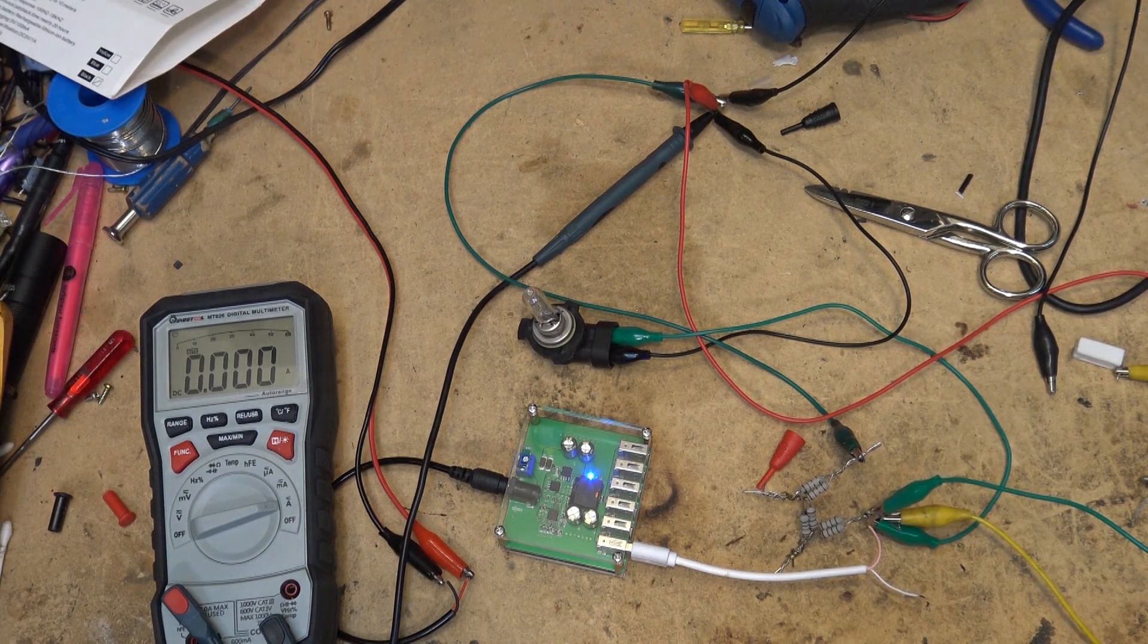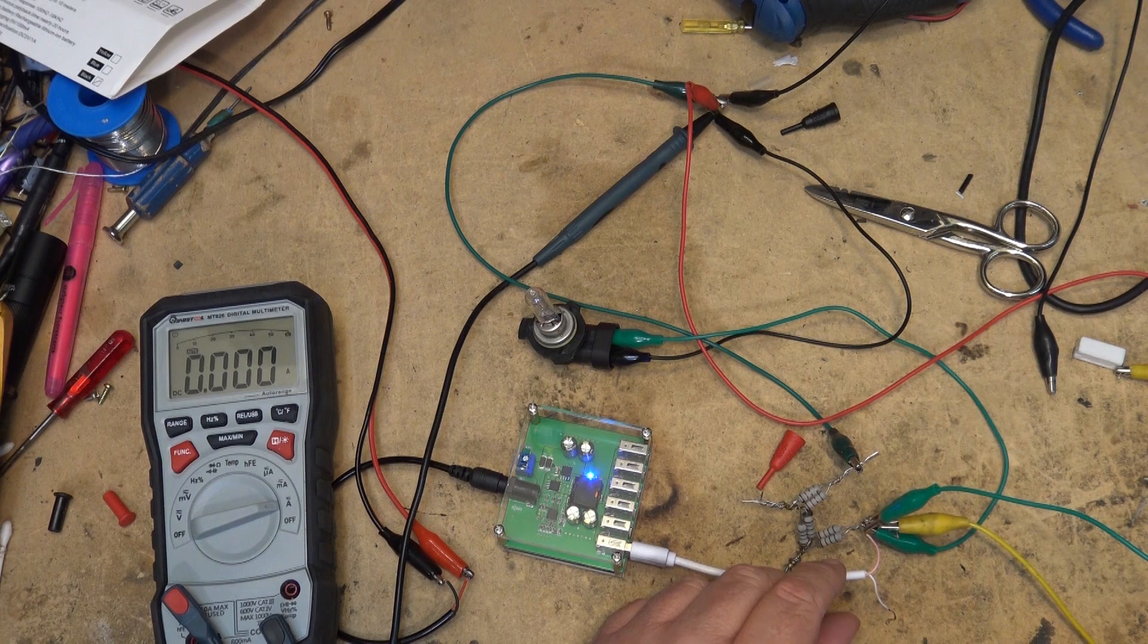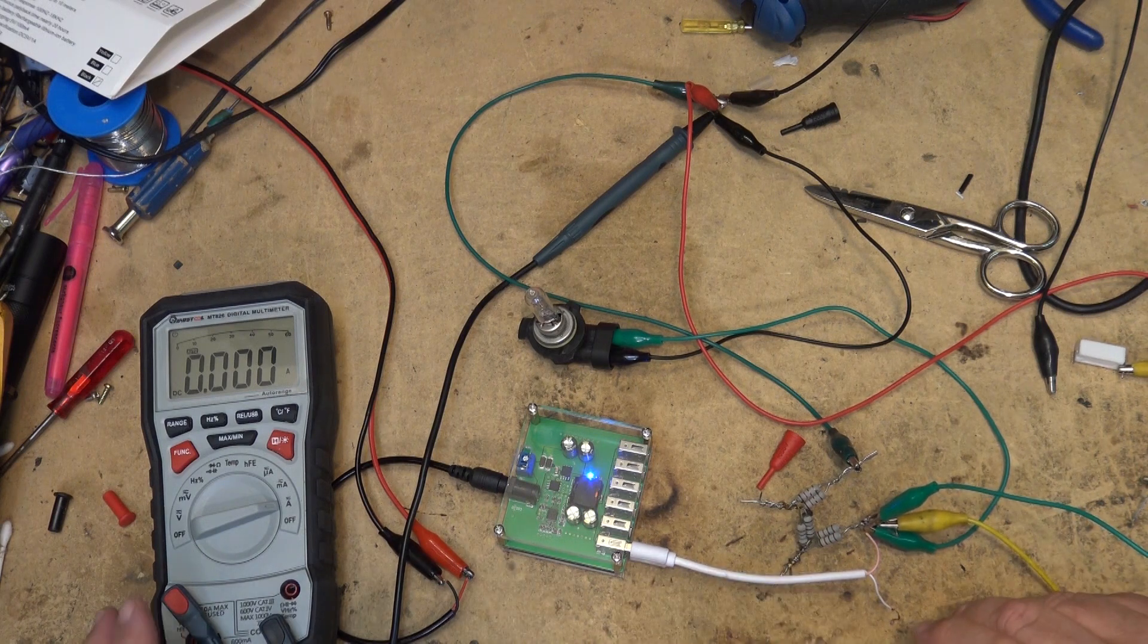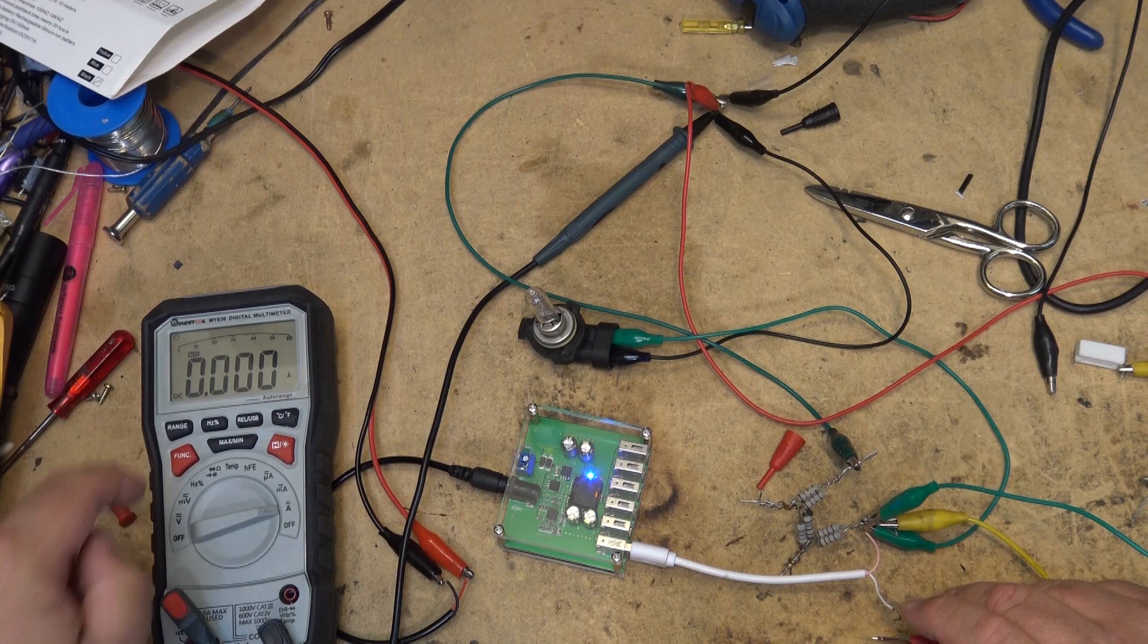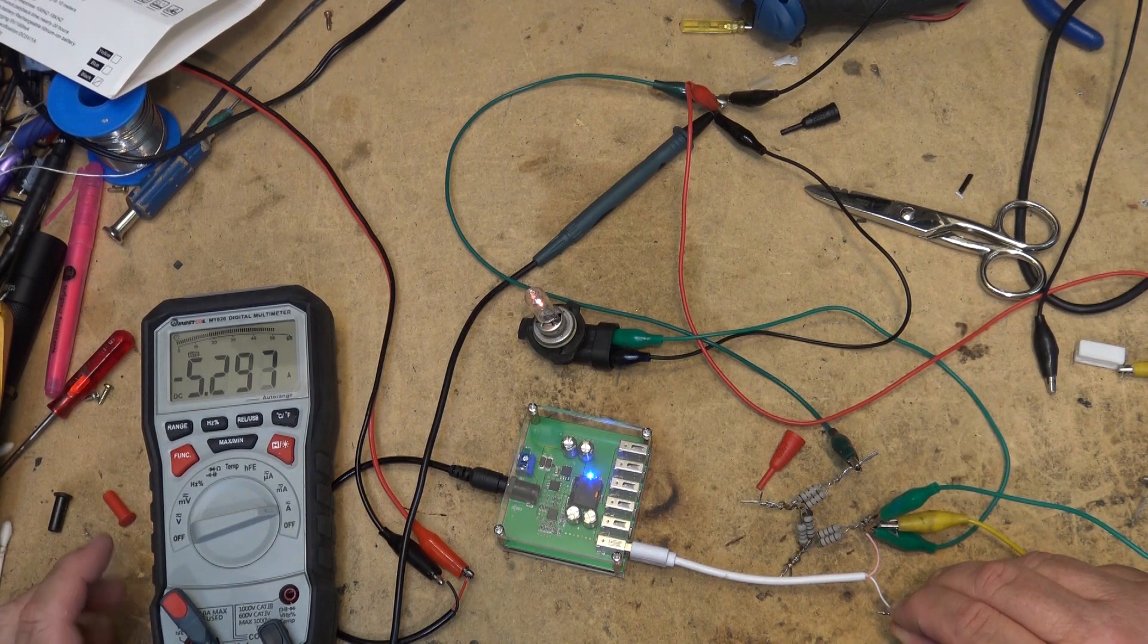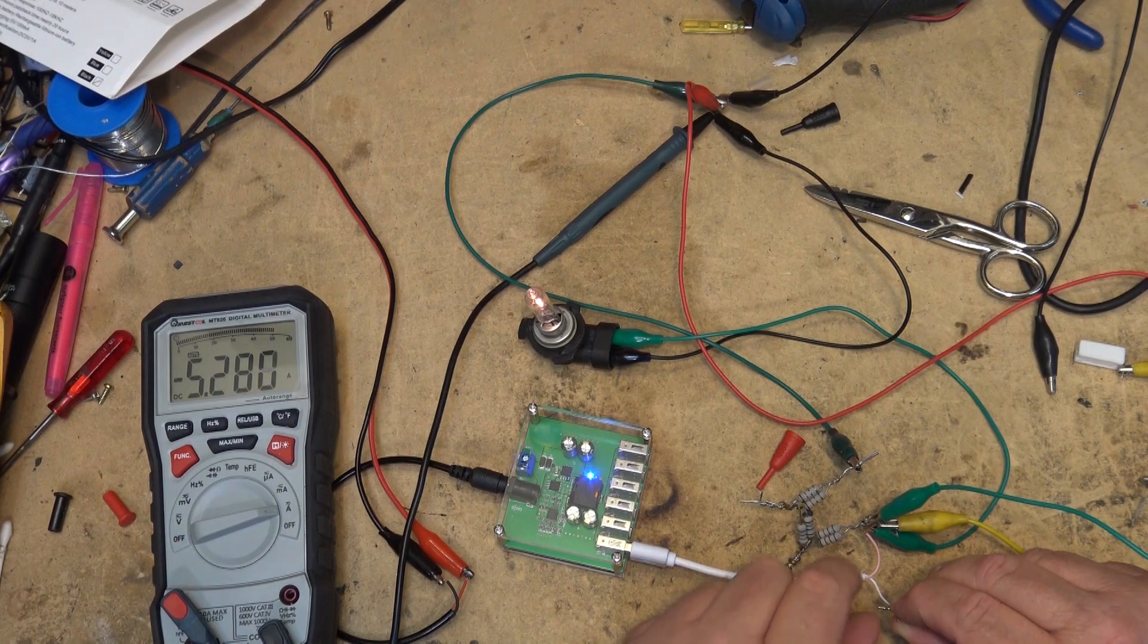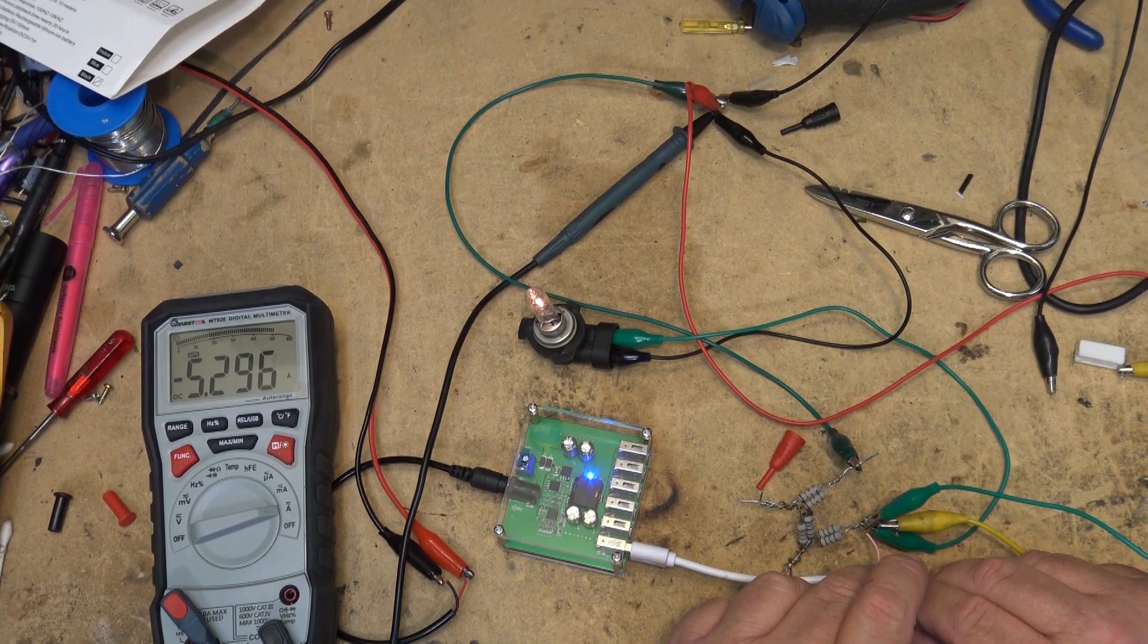Now I'm probably going to exceed the current handling capability of this wire, but I'm definitely going to be drawing probably pretty close to the limit of this thing. Let's just check this out. This is in the 10-amp mode and we are drawing 5 amps, and this wire is getting quite warm already.